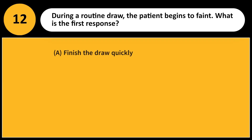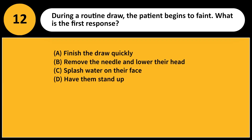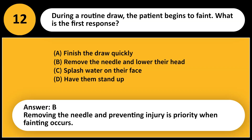During a routine draw, the patient begins to faint. What is the first response? A. Finish the draw quickly. B. Remove the needle and lower their head. C. Splash water on their face. D. Have them stand up. Answer: B. Removing the needle and preventing injury is the priority when fainting occurs.